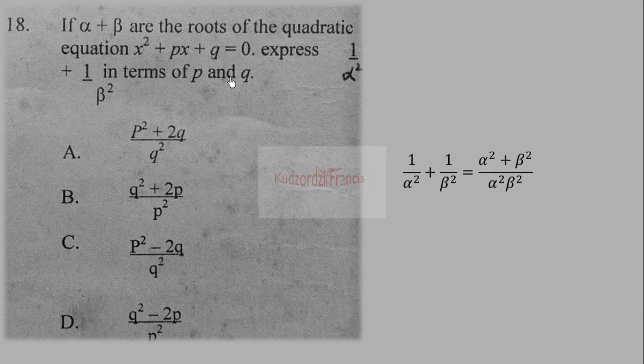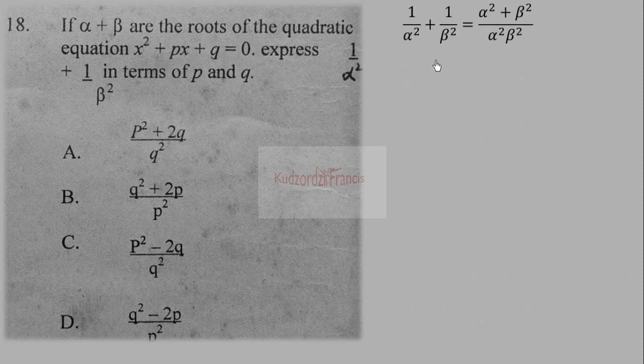If α and β are the roots of the quadratic equation x² + px + q = 0, express 1/α² + 1/β² in terms of p and q. We combine the fractions using a common denominator of α²β².